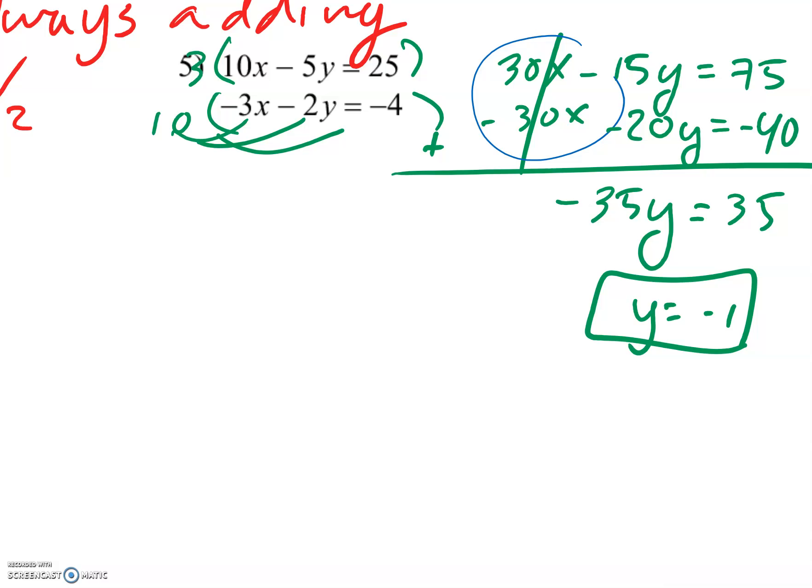Plug that in. I get negative 3x minus 2 times negative 1 equals negative 4. Negative 3x plus 2 equals negative 4. Negative 3x equals negative 6, subtracting 2 from both sides. X equals 2.